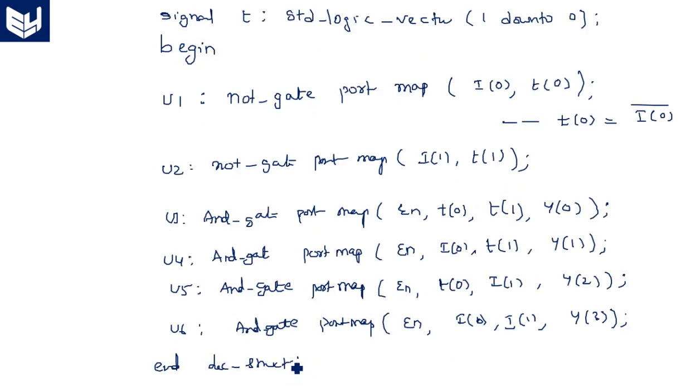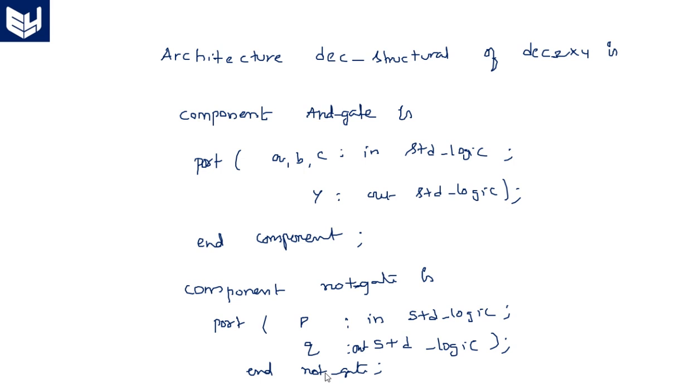This is the structural programming of the decoder 2 to 4 size. We can write like this for any size just by taking the standard logic diagram. If you know the standard gate level diagram, simply which gates are involved in that, all those gates must be instantiated like components and then we can directly write by using port map.